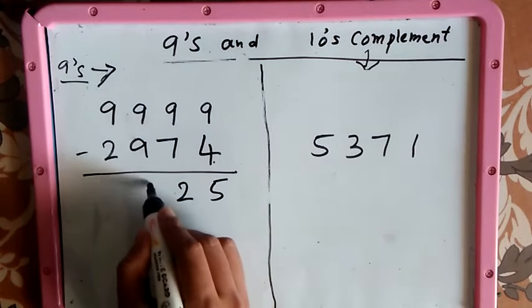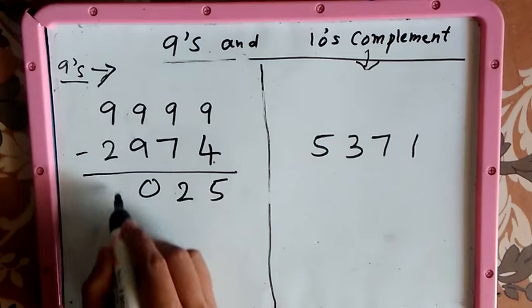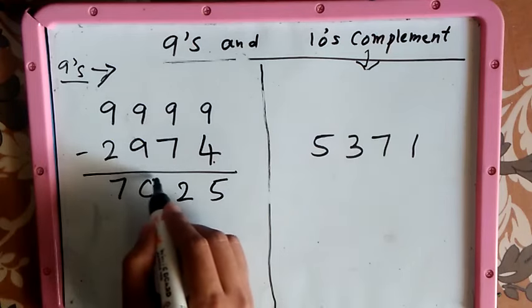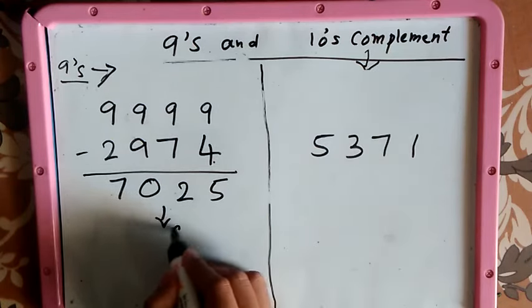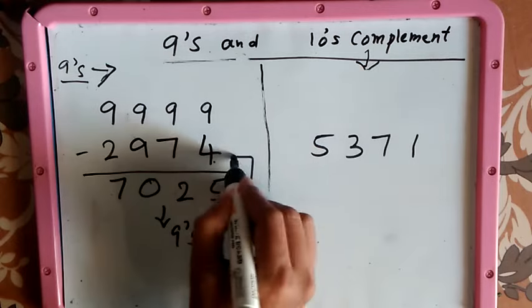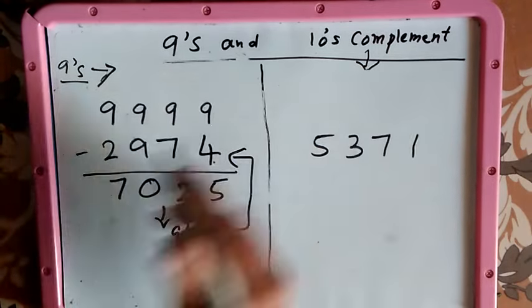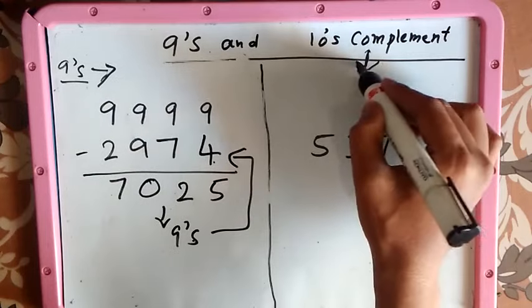So this is the 9's complement of the given number 2974, which is 7025. Then you need to find the value of the 10's complement. What we have to do: again, step 1 is similar to the 9's complement step.